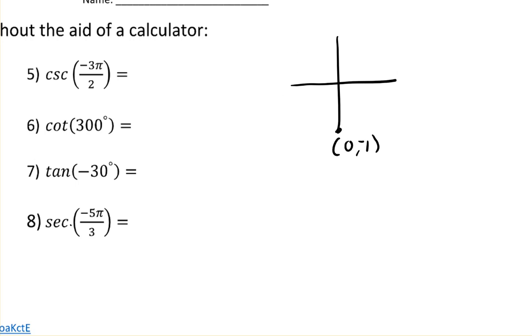Right? And so cosecant would be the reciprocal of sine, and the reciprocal of negative 1 is negative 1.